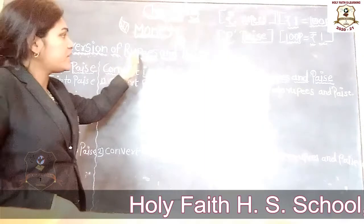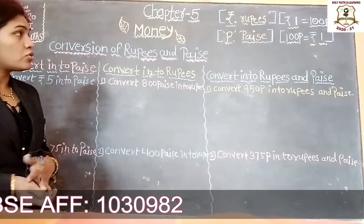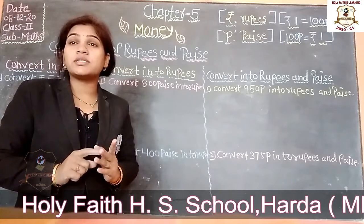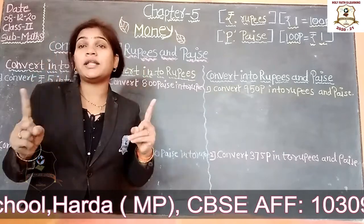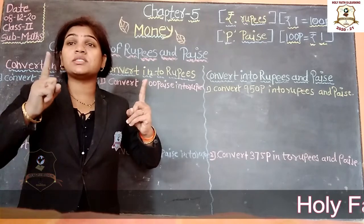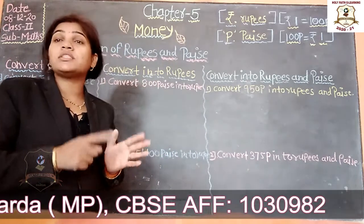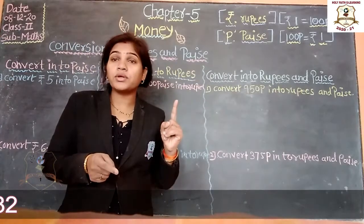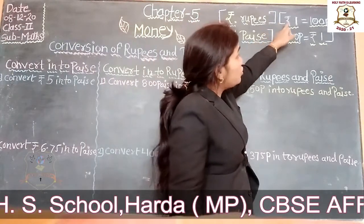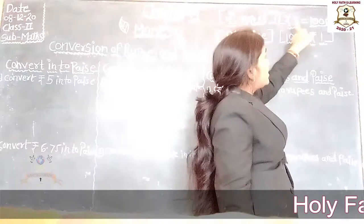Conversion of rupees and paise. We know that one rupee is equal to hundred paise. So one rupee is equal to hundred paise.